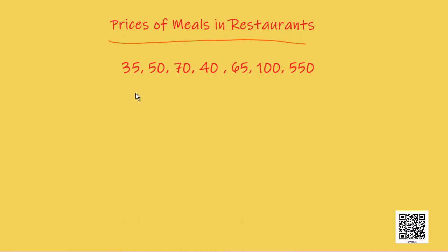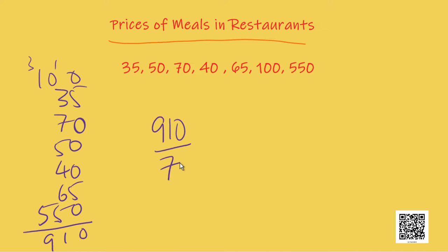The prices of meals in restaurants in a street are given as follows: 35 rupees, 50 rupees, 70 rupees, 40 rupees, 65 rupees, 100 rupees and 550 rupees. To get a sense of what this data is, we can try to calculate the average price of meals. Let us try that. So, the average will be 910 divided by 7, which is 130 rupees.